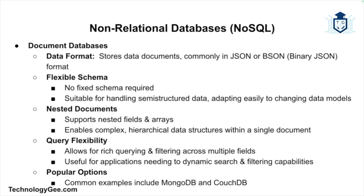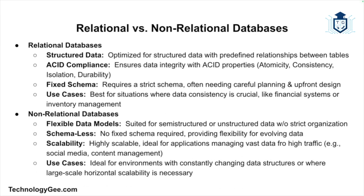A document database stores data in the form of documents, typically in JSON or BSON (Binary JSON) format. They offer flexible schemas — unlike relational databases, document databases don't require a fixed schema, making them ideal for handling semi-structured data. Documents can contain nested fields and arrays, allowing for more complex hierarchical data structures. Document databases also allow for rich querying, making them powerful for applications that need to search and filter based on various fields. Popular document databases include MongoDB and CouchDB.